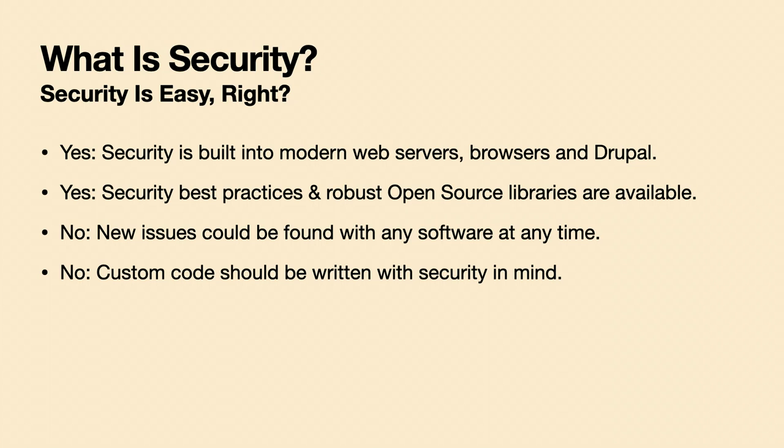When you're on the internet, someone somewhere is always trying to figure out new ways to get into somebody else's stuff. There's no real way to say something is 100% secure because there's always the possibility someone has found a new way in. Companies like Google and Microsoft even offer bug bounty programs — if you find a vulnerability and show it's a problem, they'll pay you. If you're writing custom code for your Drupal website, you should try to make security a part of that.